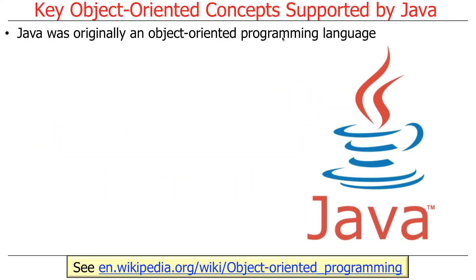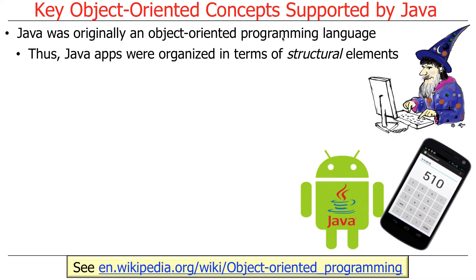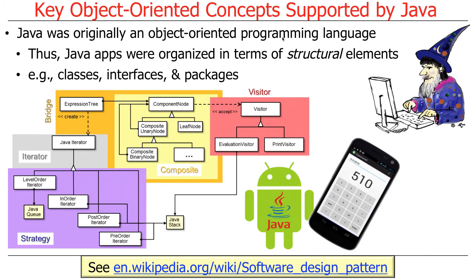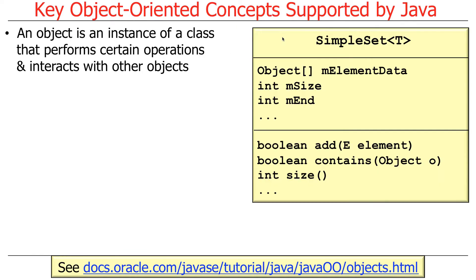Java was designed to be object-oriented. As a consequence, the way you organized a Java app was in terms of various structural elements, and these included key things like classes, interfaces, and packages. Undoubtedly you know a lot of this stuff already, so hopefully this will be a review.